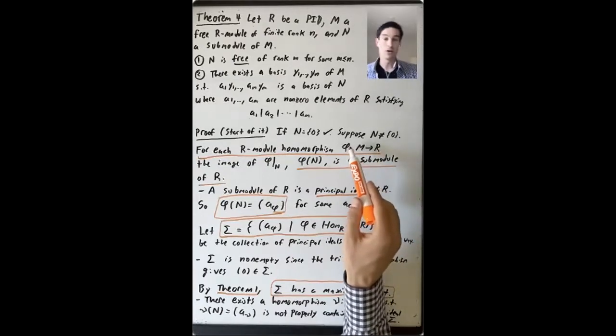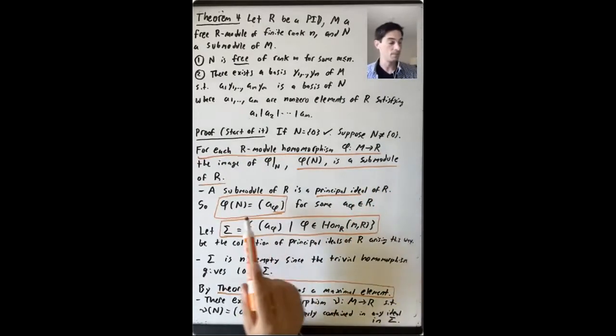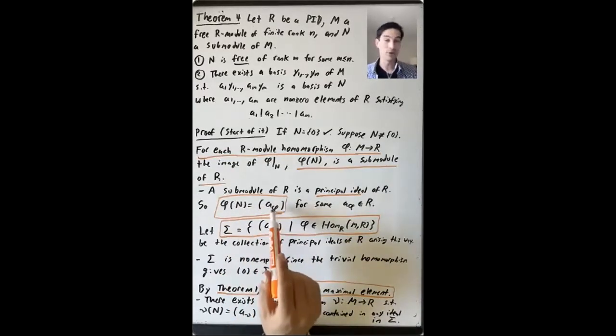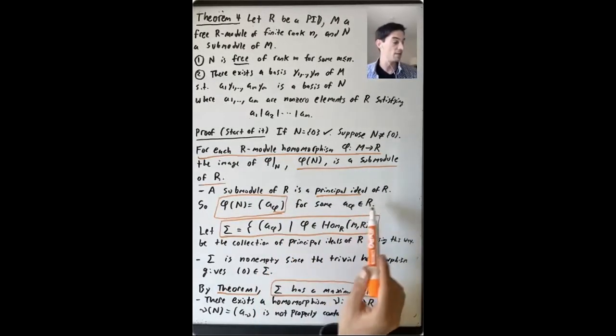So what does that mean? For each R module homomorphism from M to R, we get the image of the restriction to N, phi of N, is a principal ideal of R. So let's pick a generator for it. It's the ideal generated by A phi for some A phi in R.